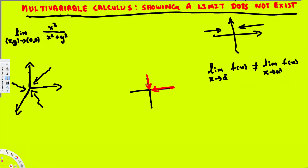For multivariable calculus we have to use different techniques. The approach is to look at individual paths — for example, approaching zero from the x-axis, and then approaching from the y-axis. If we find values that are not equal, we say the limit does not exist. Sometimes if they are equal we need to try more paths to find one that is not equal.